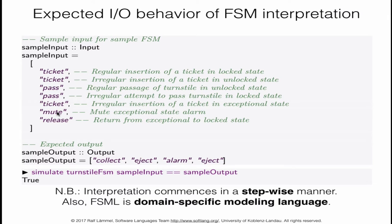To use the finite state machine interpreter, we provide a list of input events to trigger transitions and observe a list of output actions along those transitions. For example, inserting a ticket triggers the output 'collect'. We invoke the interpreter by applying it to the turnstile FSM, providing a sample input, and checking that the actual output equals the expected output.